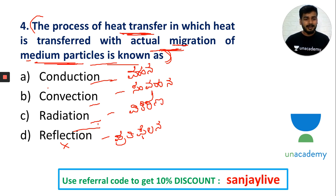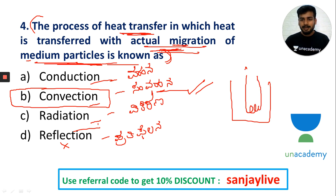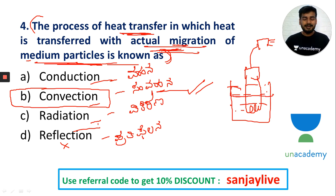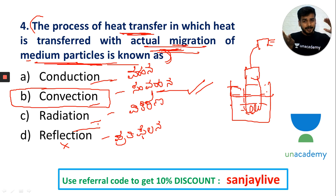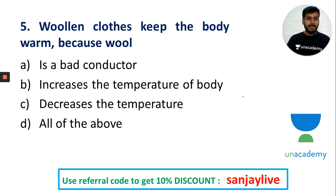In convection, actual migration of particles occurs. For example, near a heater, water at the bottom gets heated, becomes less dense, rises up, and the cooler water from the top comes down — this is convection. The principle of the solar water heater works on this density difference and particle movement. A separate chamber layer is used in its design.